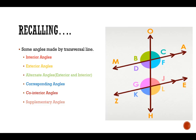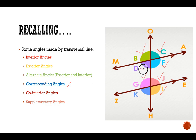Then we come to corresponding angles. Corresponding angles are c and j, f and l, b and g, d and k — that means one angle is exterior while the other is interior in the case of corresponding angles.